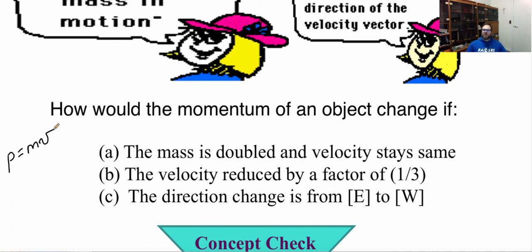Now let's take a look at b. If the velocity is reduced by a factor of one-third, what will happen to my momentum? My last one is going to be a change in direction from east to west. So let's say you're going east, now you're going west. What happens to my momentum? That's for you guys to think about.